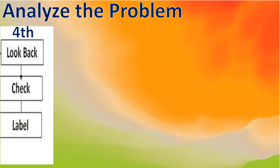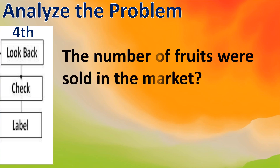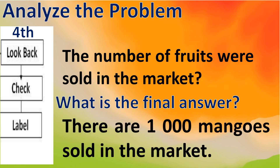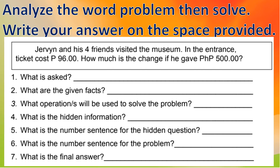For the last step — look back, check, and label. The question was how many fruits were sold in the market. The final answer is: there are 1,000 mangoes sold in the market. For your assignment, analyze the word problem and solve it, then write your answer in the space provided and turn it in on our Google Classroom.